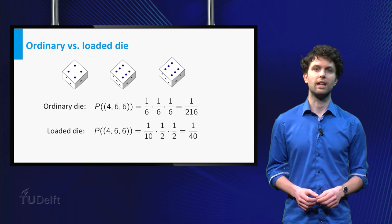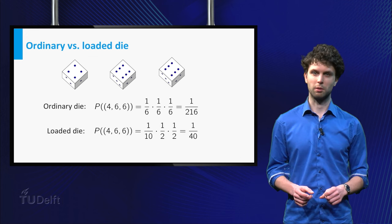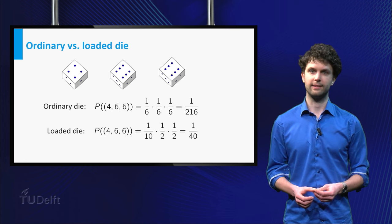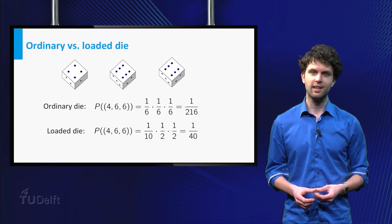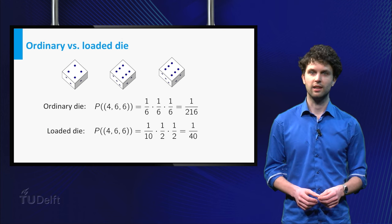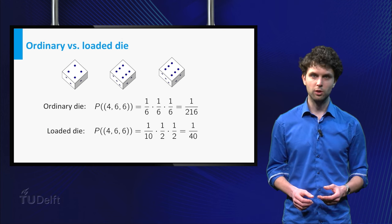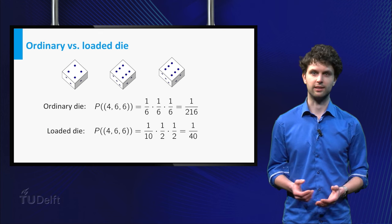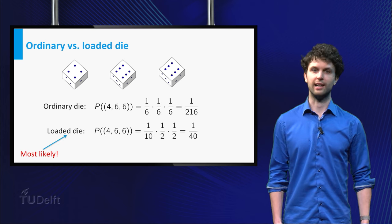Alternatively, if you throw with a loaded die, this probability becomes 1 over 40. So with a loaded die, the probability of seeing a four and two sixes is much higher. In other words, it is more probable to throw 466 with a loaded die than with a standard die. And we say it is most likely that the loaded die was thrown.